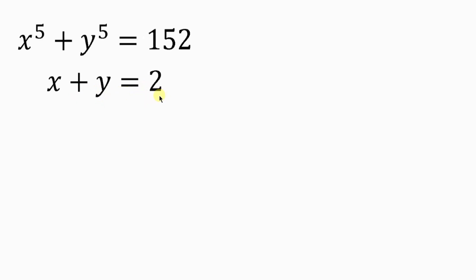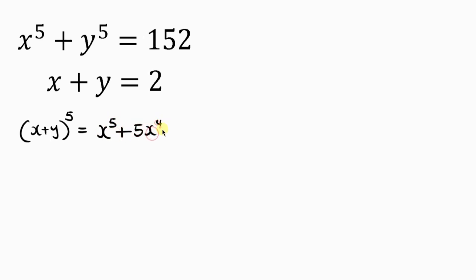Our first step towards solving this question is to take the first equation into consideration. x to the power 5 plus y to the power 5 can be taken from x plus y raised to the power of 5. Let's go ahead and use binomial expansion to expand this expression. Using the binomial expansion, this will be equal to x to the power 5 plus 5x to the power 4y plus 10x to the power 3y squared.